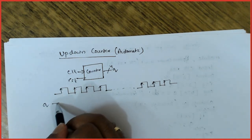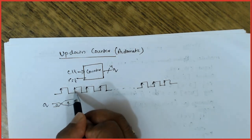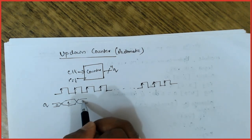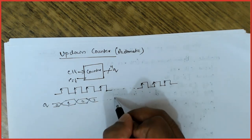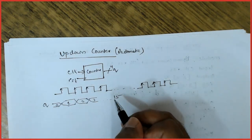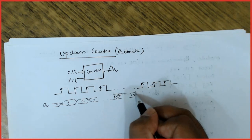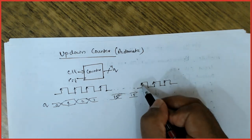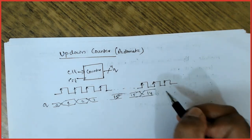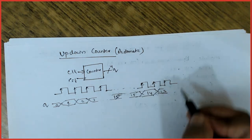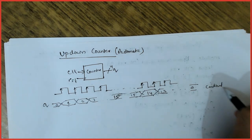Initially Q is 0. At the first positive edge it goes to 1, next positive edge it increments to 2, then 3, continuing until it reaches 15. Once it reaches 15, after the next positive edge it should decrement. It goes on decrementing until it reaches 0, then continues thereafter.